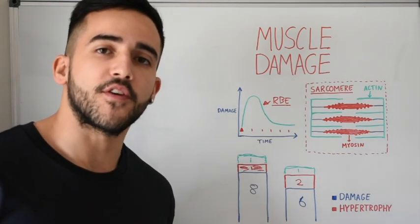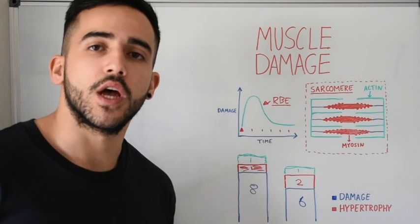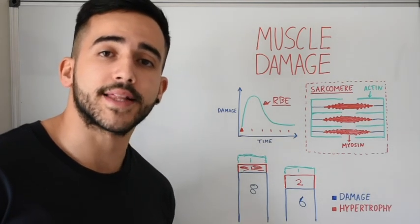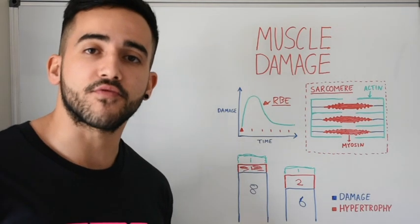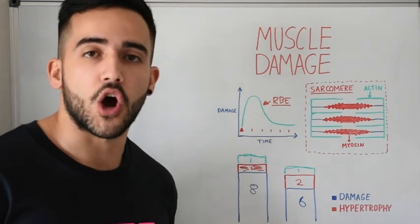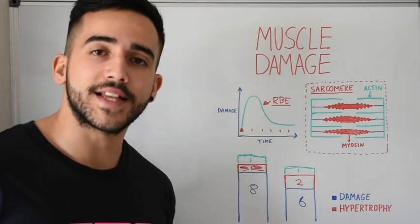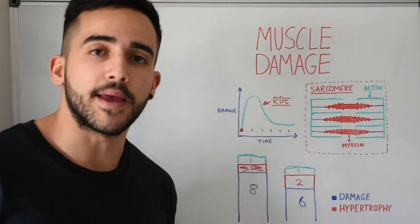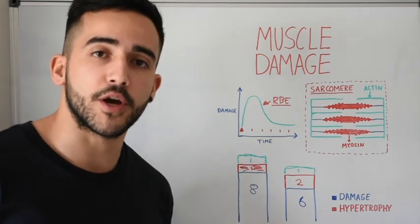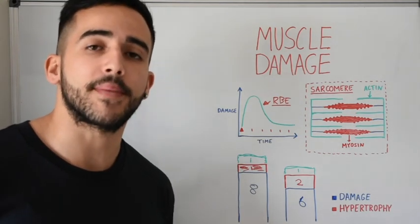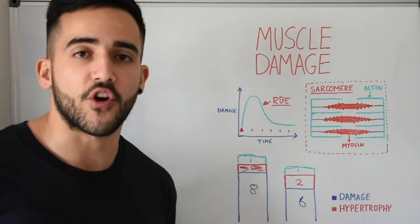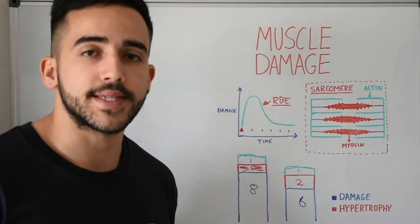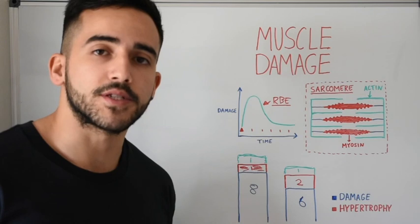That's it for today. Here are three main takeaways: First, muscle damage does not have to be present for muscle growth to occur. Second, the more muscle damage you induce, the less myofibrillar protein synthesis you are likely to see, because adaptive resources are directed toward recovery. Third, for advanced athletes, disrupting contractile homeostasis to a greater degree may be beneficial to maximize hypertrophy, while intermediates and beginners should focus on limiting muscle damage and progressively overloading their training. Let me know if you have any questions — I'll see you next week.